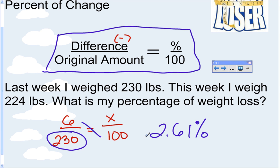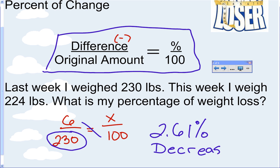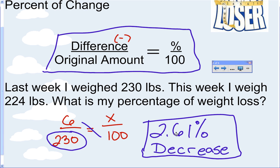We have to add one other piece of information to our answer. If I told you your percent of weight change was 2.61%, you wouldn't know if you gained or lost weight. We have to say whether this is an increase or a decrease. Last week I weighed 230, this week I weigh 224 — the value went down. So the answer is a 2.61% decrease.